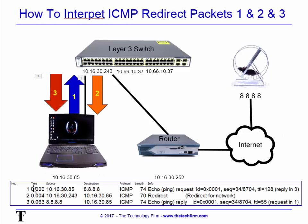Looking at the actual trace: packet number one, highlighted in blue, goes off to 8.8.8.8 via my default gateway — now it's his problem. Packet number two shows 30.85 receiving a redirect from 30.243. Packet number three shows the ping coming back, so the ping worked. But when you see redirect packets, you should take a moment to find out why they're there and whether they're by design. Fixing this may not yield a noticeable performance gain, but it will make things cleaner and easier to troubleshoot when there is a problem.